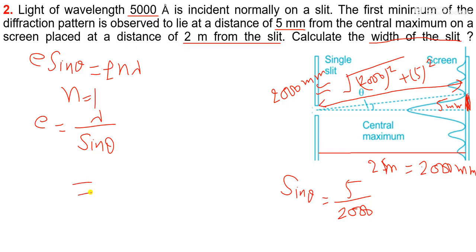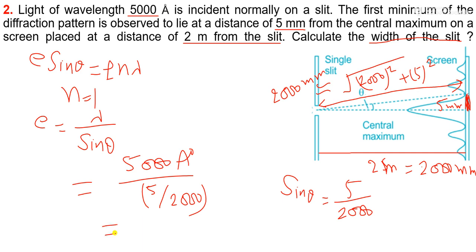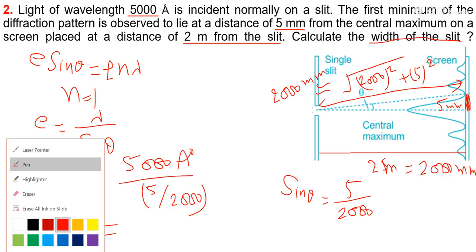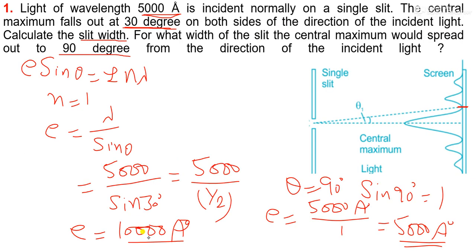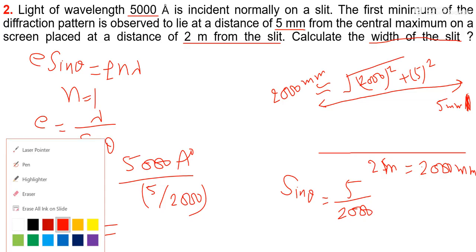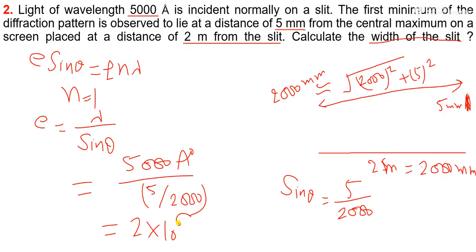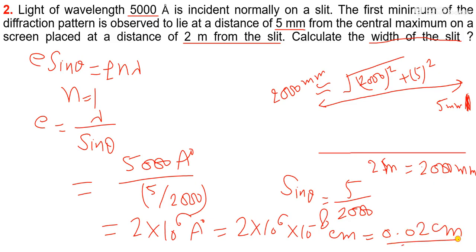Now we put the value of sin theta and lambda: lambda is 5000 angstrom upon sin theta which is 5 by 2000. It comes out to 2 into 10 to the power 6 angstrom. Since 1 angstrom equals 10 to the power minus 8 centimeter, this comes out to 0.02 centimeter.